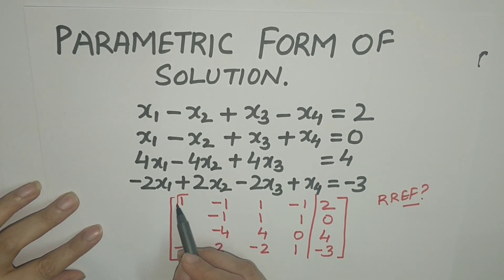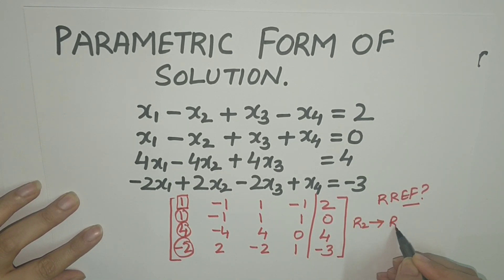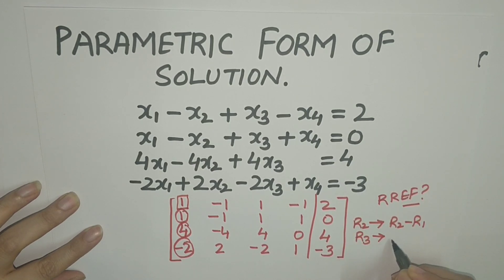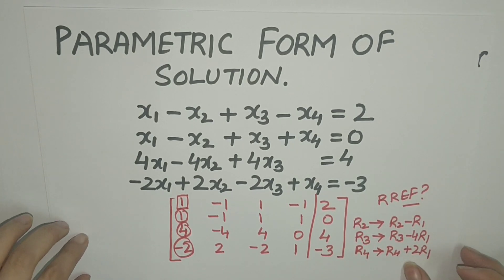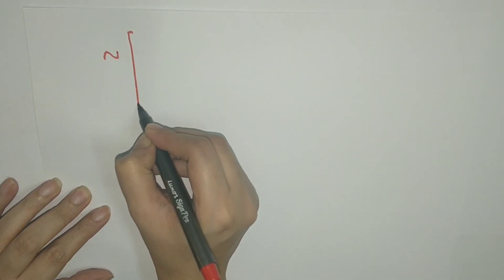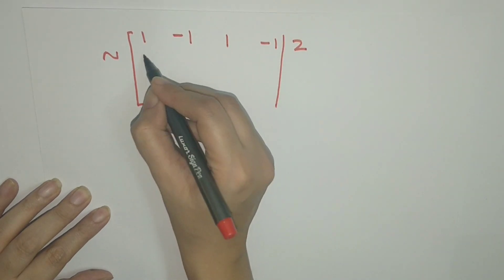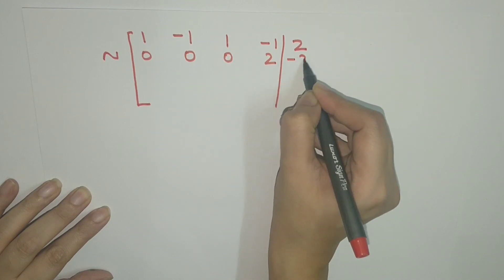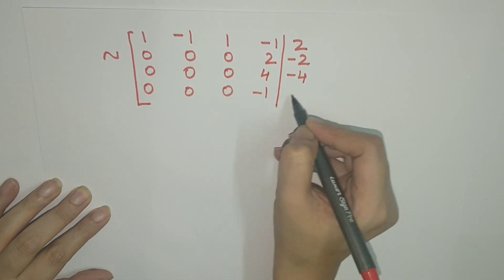Since the first leading entry is 1, we reduce the entries below it to 0 by applying: R2 → R2 - R1, R3 → R3 - 4R1, R4 → R4 + 2R1. After these operations, the augmented matrix becomes [1, -1, 1, -1, 2 / 0, 0, 0, 2, -2 / 0, 0, 0, 4, -4 / 0, 0, 0, -1, 1].